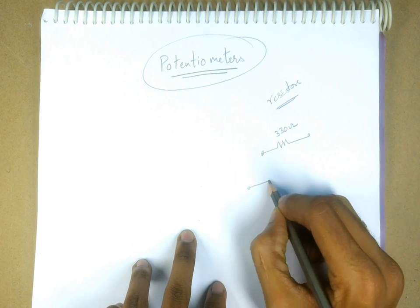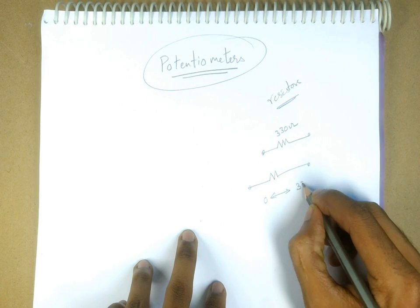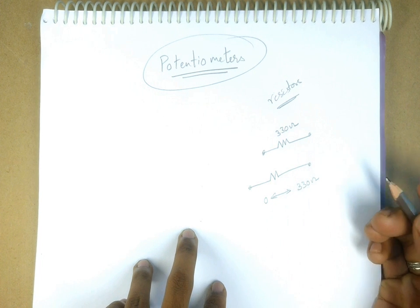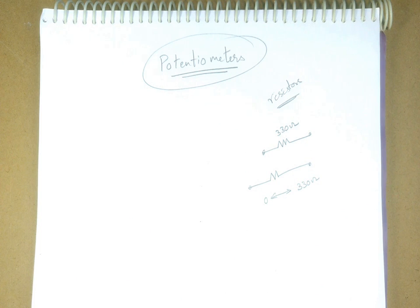But what if I need some other resistance value under 330 ohms, say somewhere between 0 to 330 ohms? Then this resistance cannot be used. In those cases, we will be using a potentiometer.